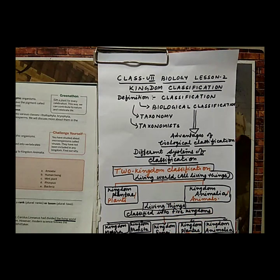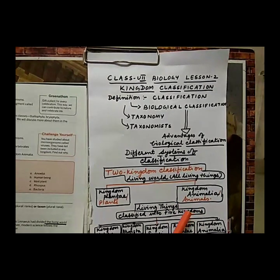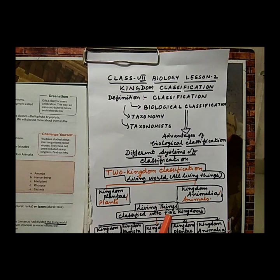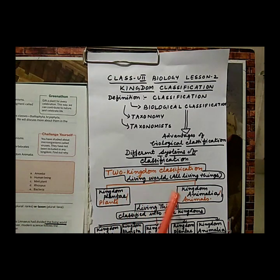The fourth kingdom is kingdom Plantae. These are multicellular and autotrophic in nature, with chlorophyll present. The cell wall is made up of cellulose. Kingdom Plantae is subdivided into different classes: thallophytes, bryophytes, pteridophytes, gymnosperms, and angiosperms. All of these will be discussed in later lessons.